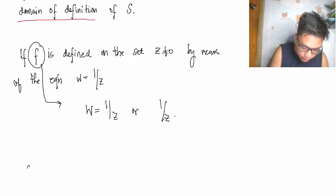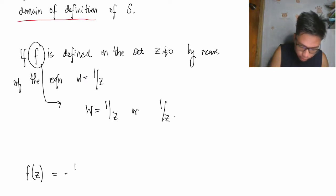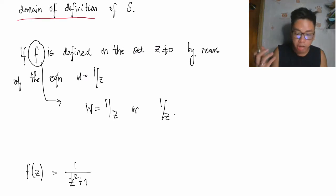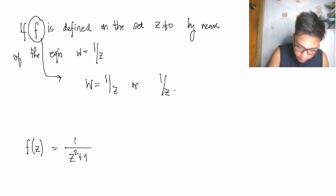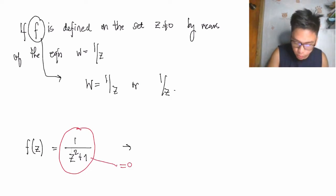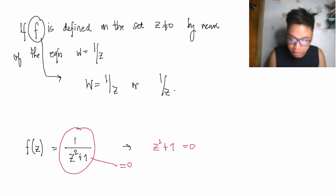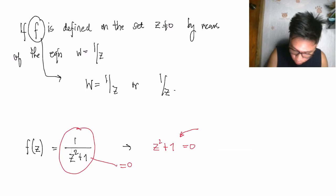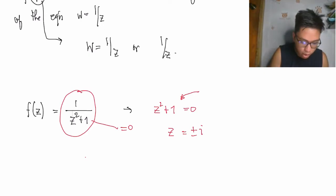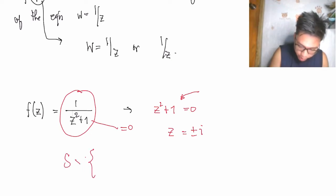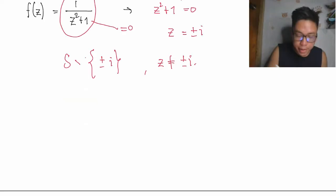How do we describe the domain of definition for a given complex variable function? Let's say f(z) = 1/(z² + 1). Observe that this is not defined when z² + 1 = 0. We equate z² + 1 to zero and avoid values that make it zero. This is achieved when z = ±i. Therefore the domain of definition is the set S excluding {+i, −i}, or simply z ≠ ±i.